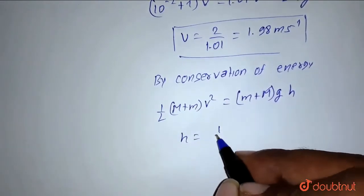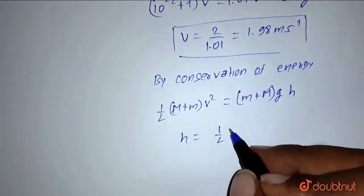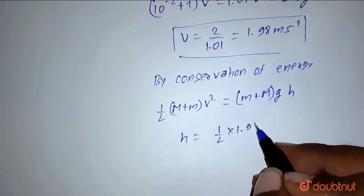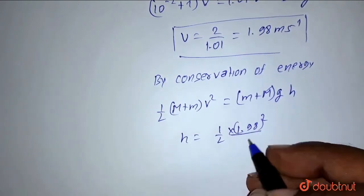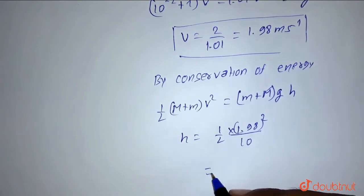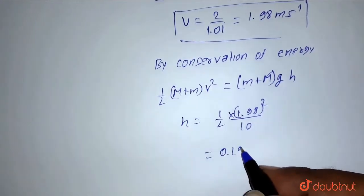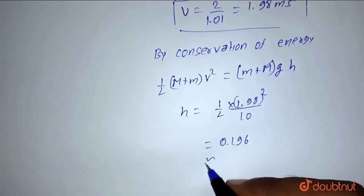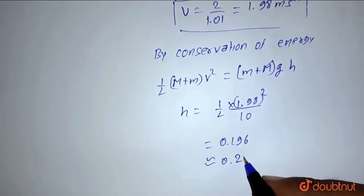So h = V²/2g = (1.98)²/10 = 0.196, which is approximately 0.2 meters.